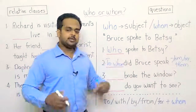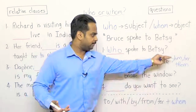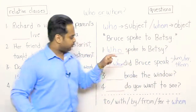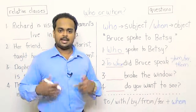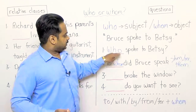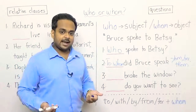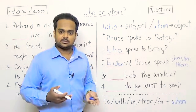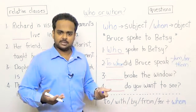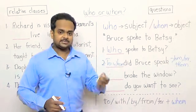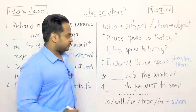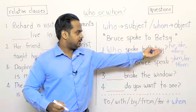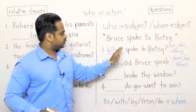So to the question, to whom did Bruce speak? We can say Bruce spoke to him, Bruce spoke to her, Bruce spoke to them. So if there's an M in the answer, then you put an M in the question — this is the M-in-whom rule. But for the first sentence, you cannot answer with him, her, or them. You cannot say him spoke to Betsy or her spoke to Betsy. But you can say he spoke to Betsy or she spoke to Betsy. So if the answer can be he, she, or they — that is there's no M in the answer — there's no M in the question.